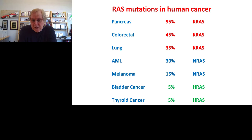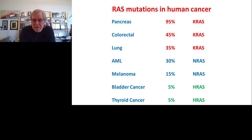There are three types of RAS protein in the cell which drive human cancer. KRAS is the most prominent, but NRAS also plays an important role in leukemias and melanoma, and HRAS in bladder and thyroid cancer. Altogether, these RAS oncogenes play a direct causal role in over a million cancer deaths per year, and yet we have no drugs that target the RAS protein directly. This is a huge unmet clinical need.